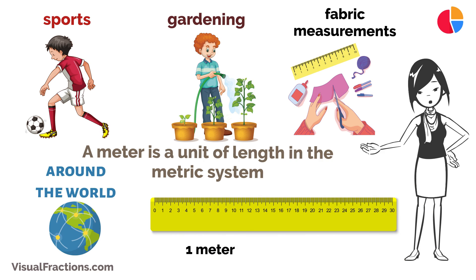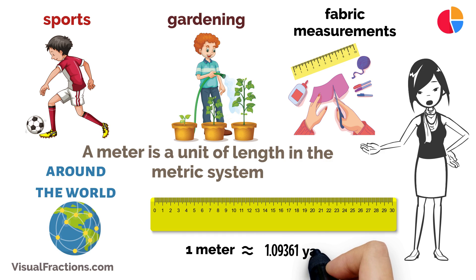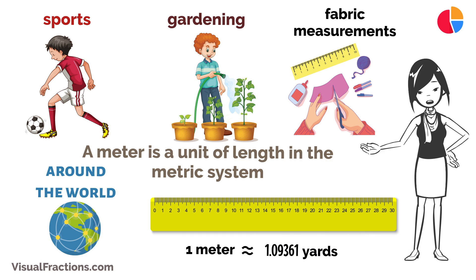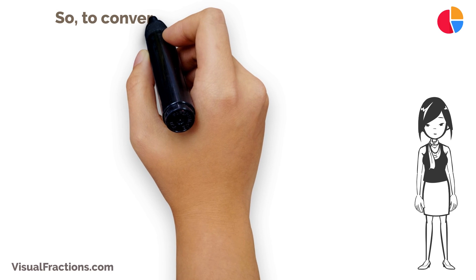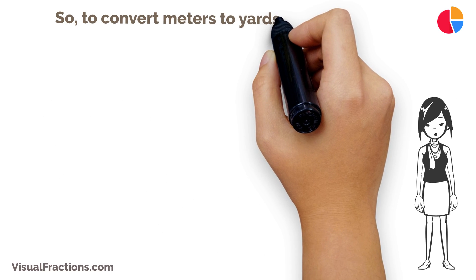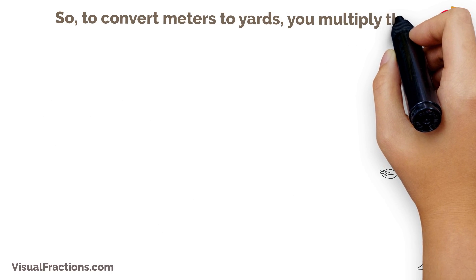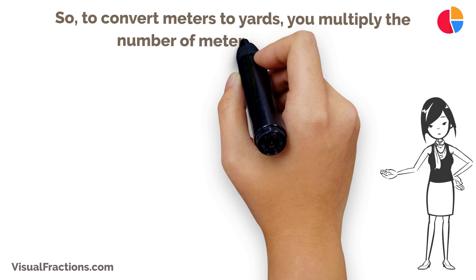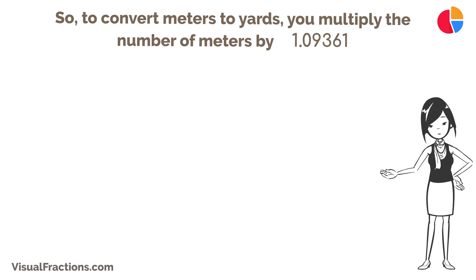Here's the key to the conversion. One meter is approximately equal to 1.09361 yards. So, to convert meters to yards, you multiply the number of meters by 1.09361.